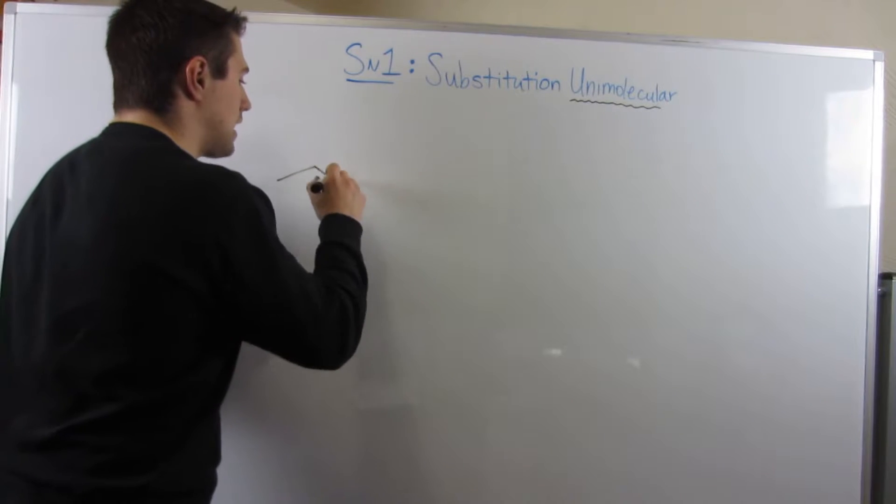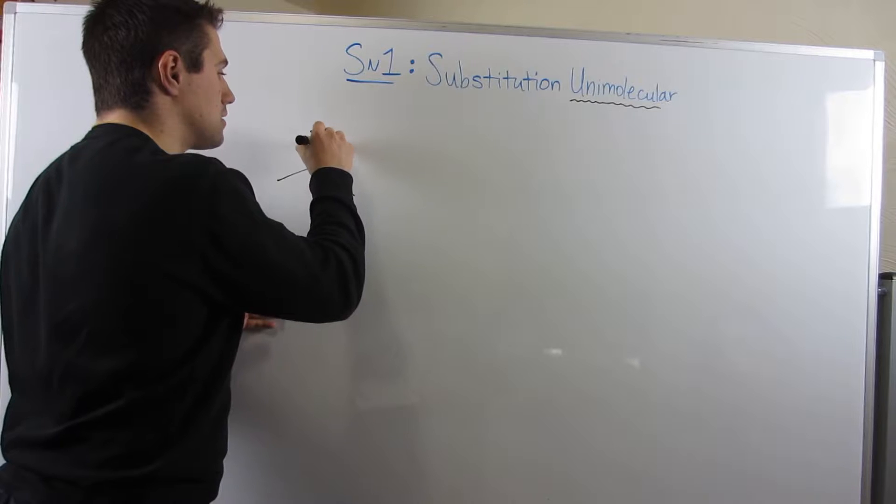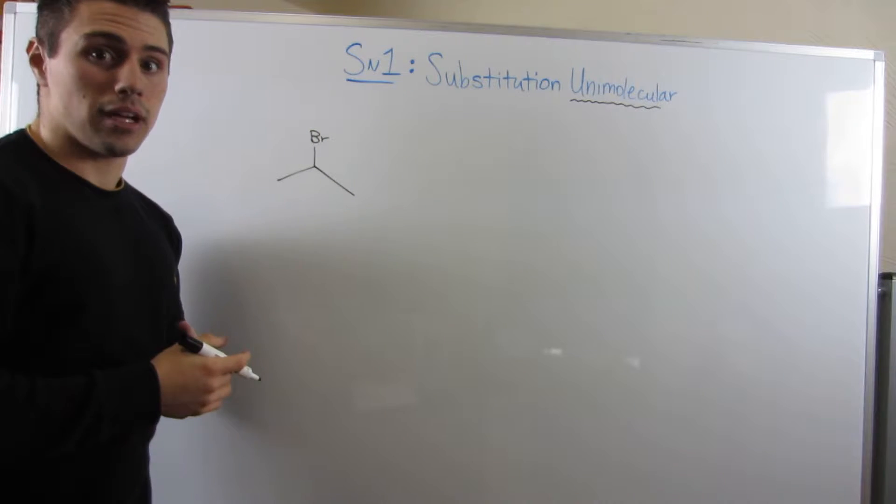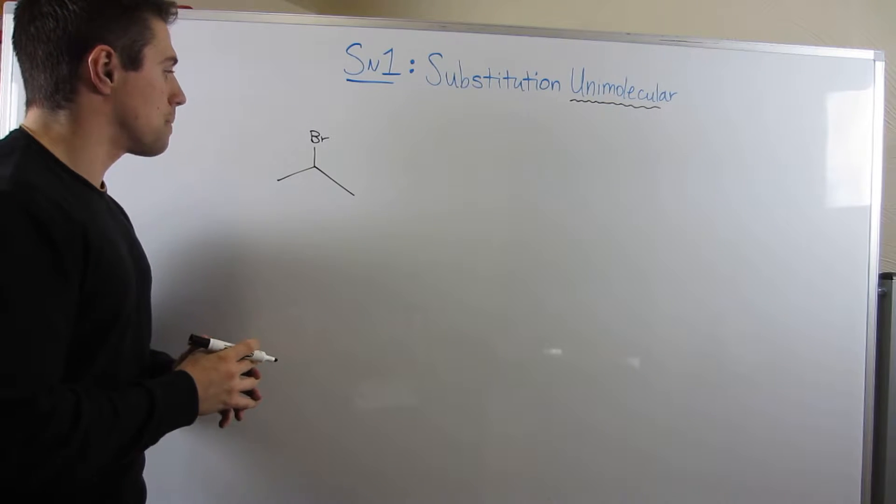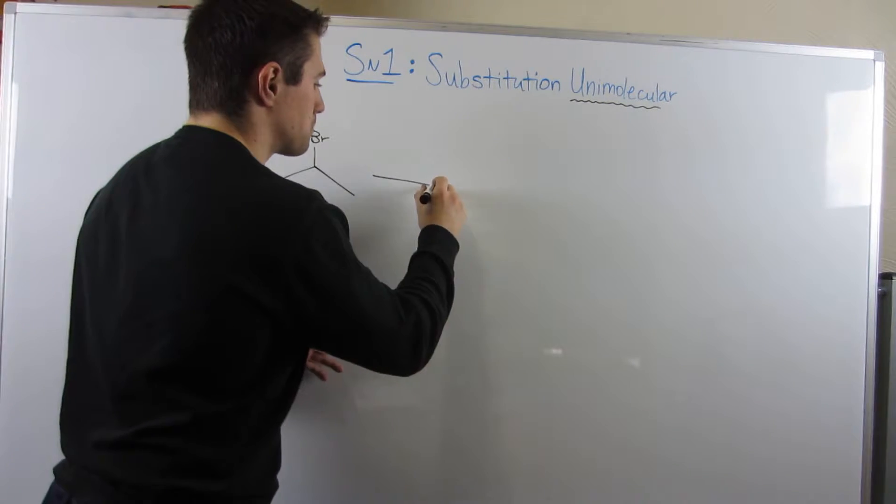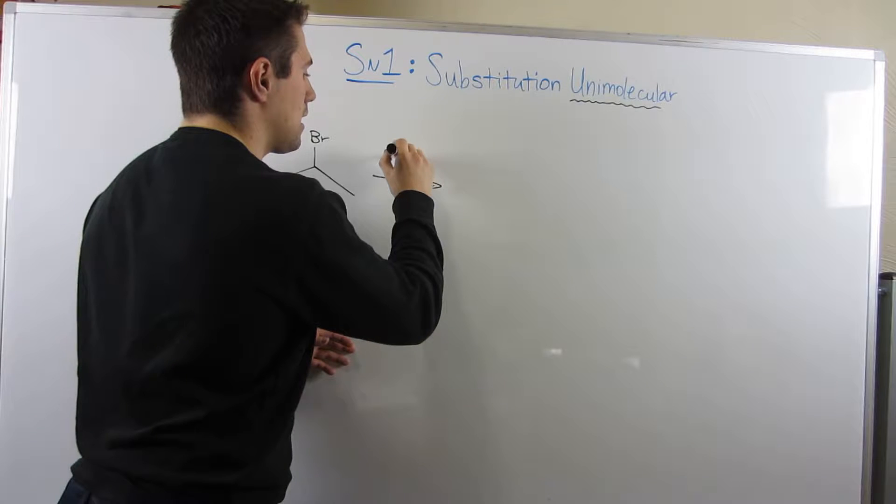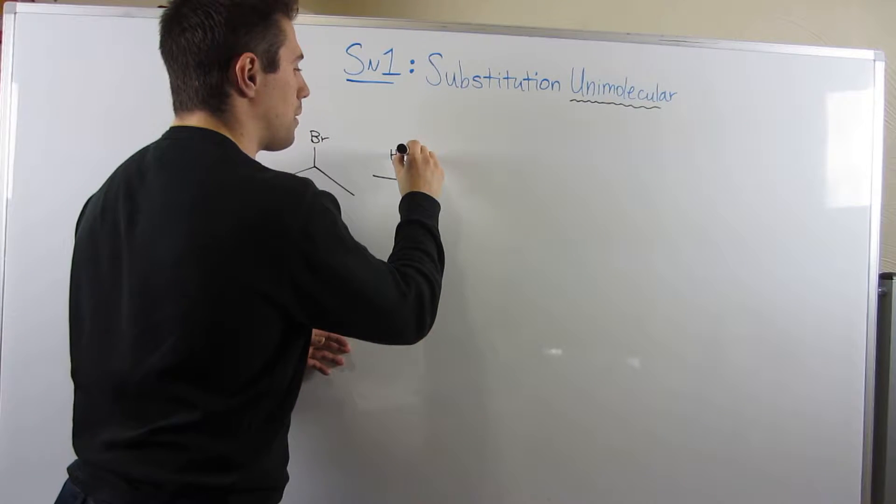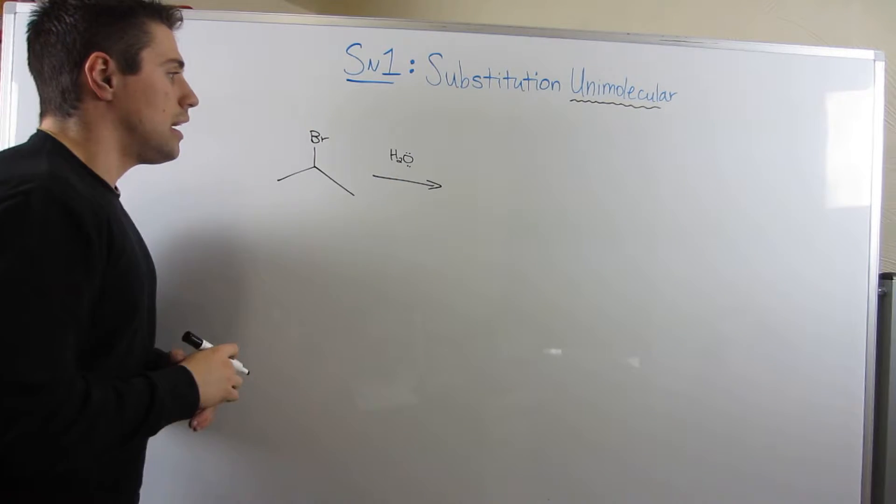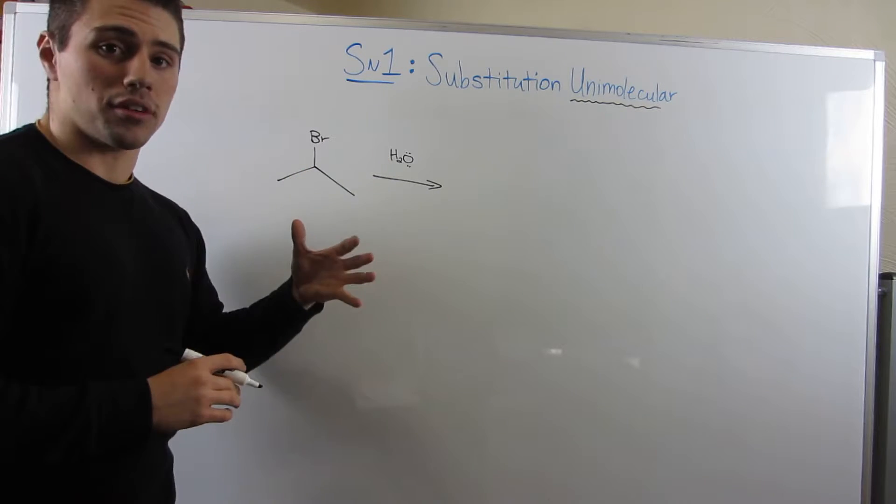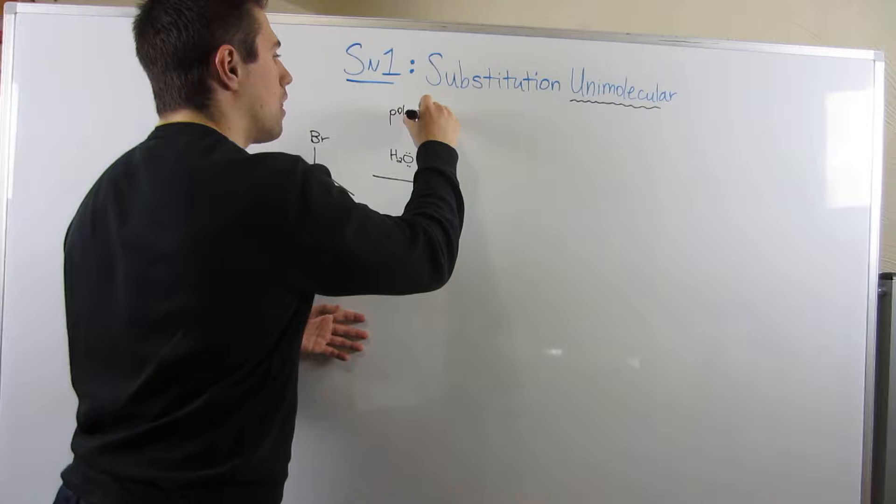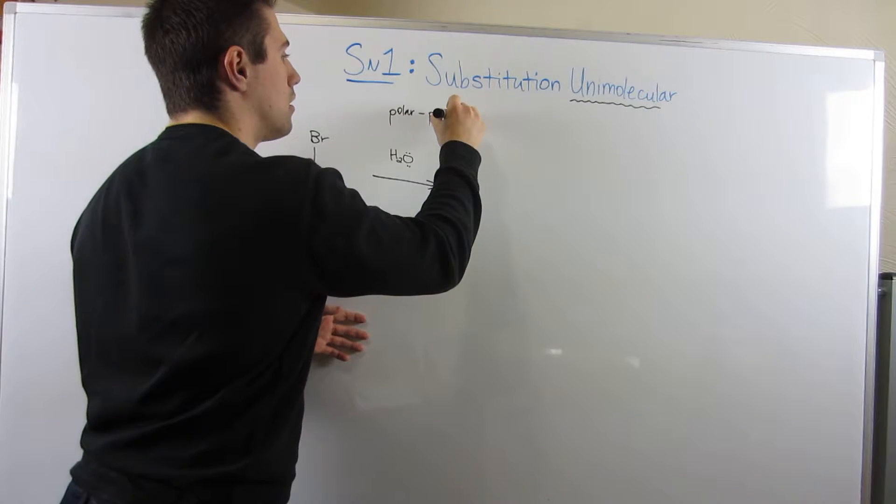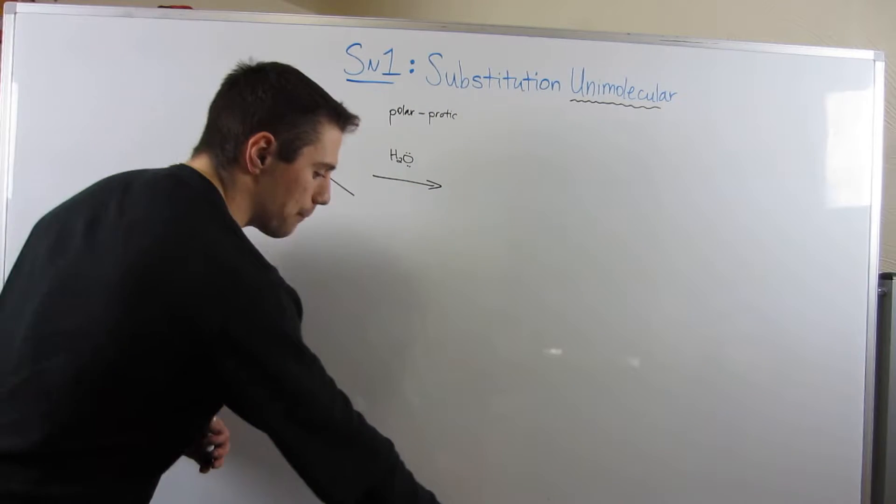So let's say I gave you guys, we start out with isopropyl bromide, right, flashing our amazing common naming skills. And then let's just say I had an arrow, and we were just surrounded by water. Remember what kind of solvent water is - water is a polar protic solvent.